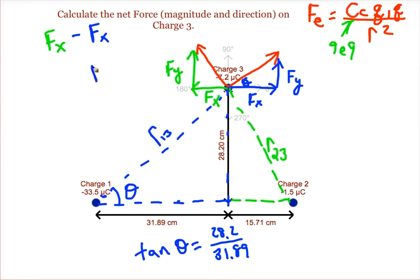And then in the y direction, since they are both pointing up in this case, we're going to add our two forces together. So we take the vertical part of the one force, add it to the vertical part of the other force. We now have our net vertical force.